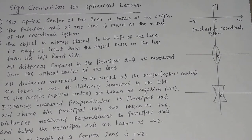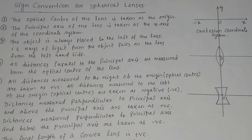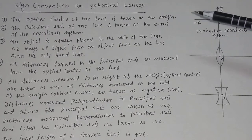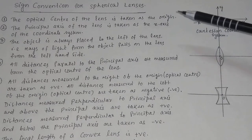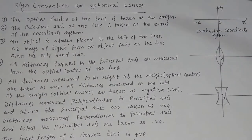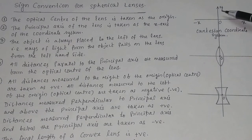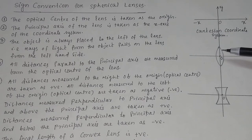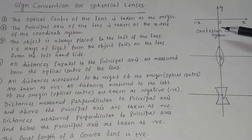Sign Convention for Spherical Lens. Previously we have discussed about the sign convention for spherical mirrors. Today we will discuss about the sign convention for spherical lenses. The sign convention applied to the lens is from the Cartesian coordinate system.